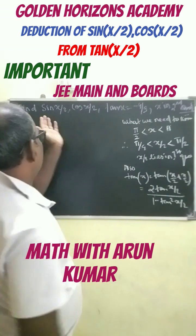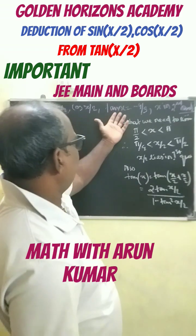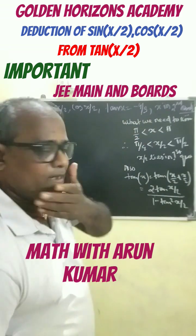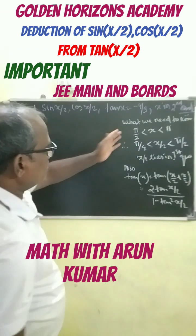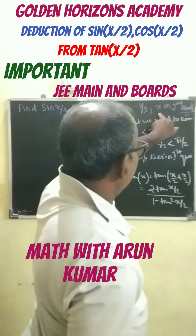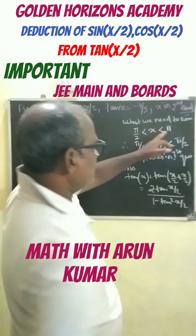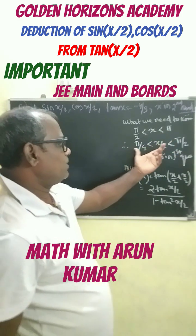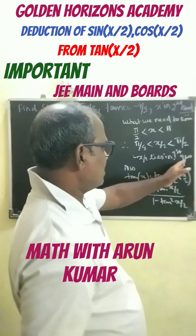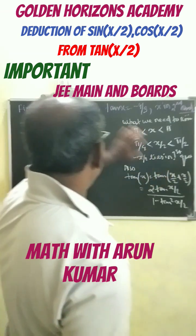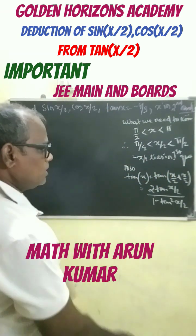We have to find sin(x/2) and cos(x/2) given that tan(x) equals minus 4 by 3. In this case, x is in the second quadrant, so pi/2 is less than x and x is less than pi. Dividing by 2, we get that x/2 lies in the first quadrant, in which all trigonometric functions are positive.